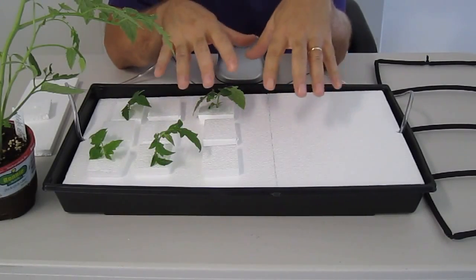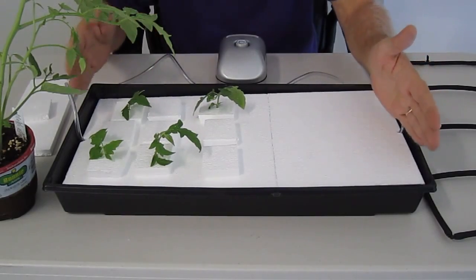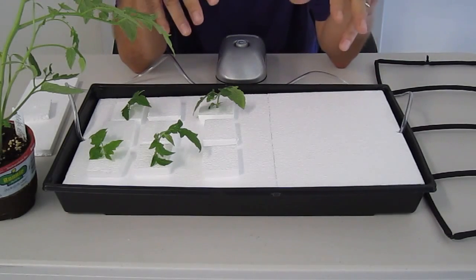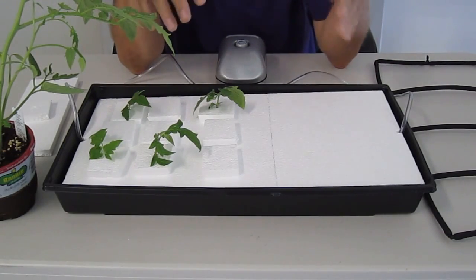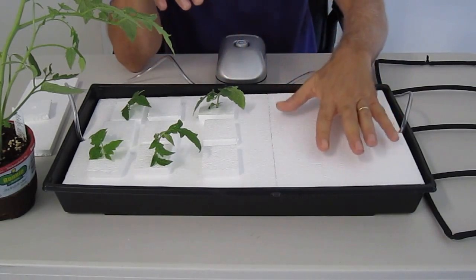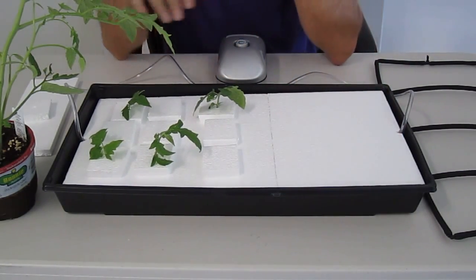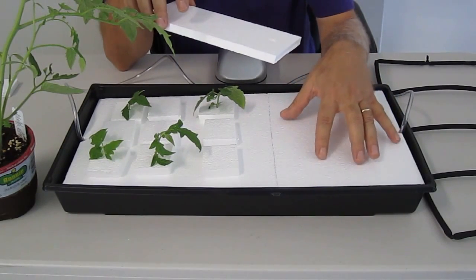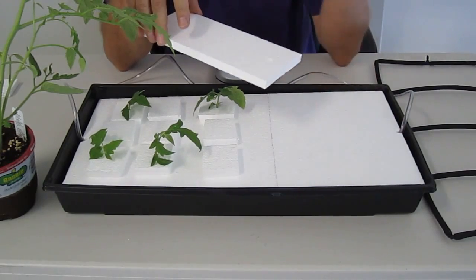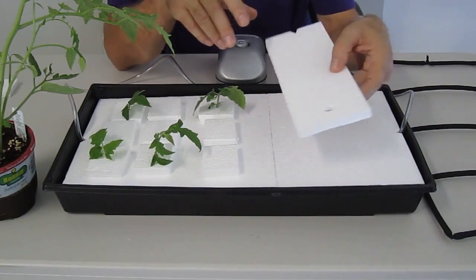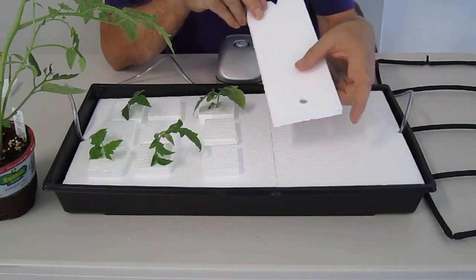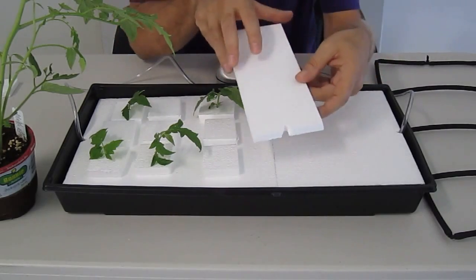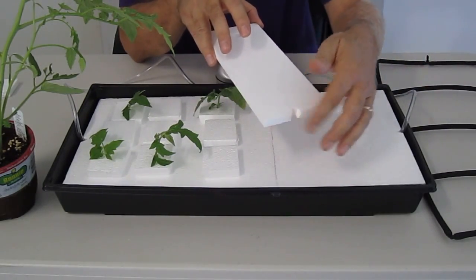Now that you have a close up of what we've done, we've taken a 20 by 10 standard propagation tray. You can buy these anywhere on the website, any hydroponic store or plant nursery. We built a floating raft system. We simply took styrofoam one half inch thick, 12 by 12s, cut them down and each piece we cut a half inch hole. On the end where the air lines are going to come out, we just notched it so that fits the air lines coming out.